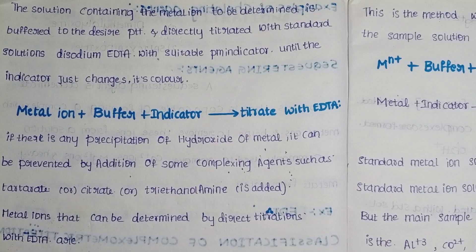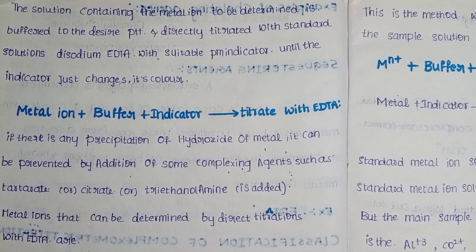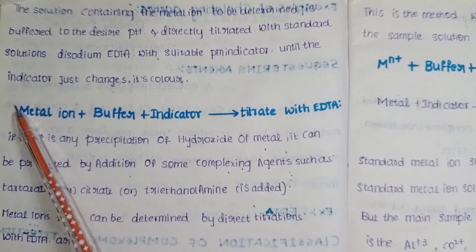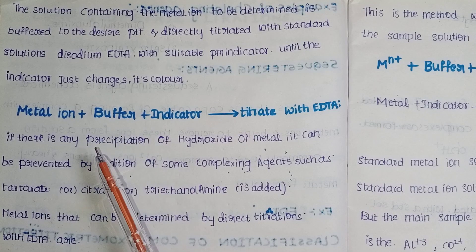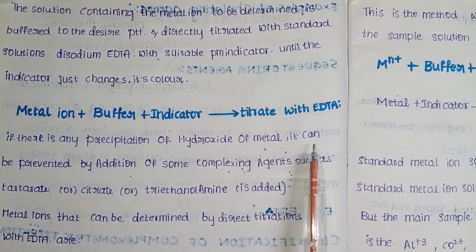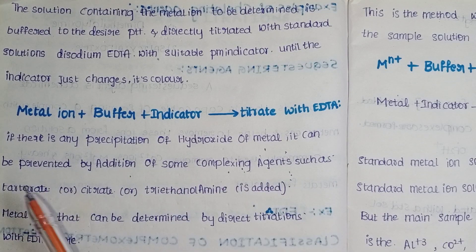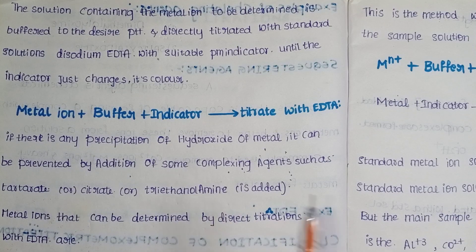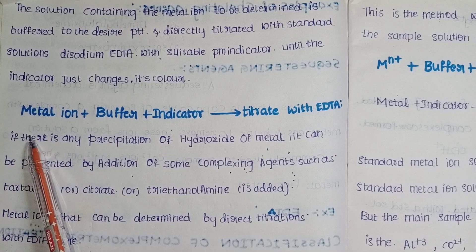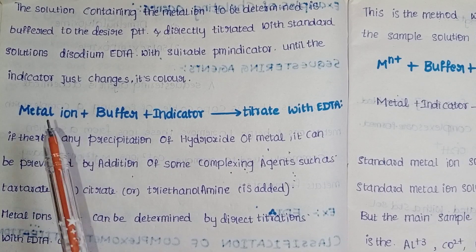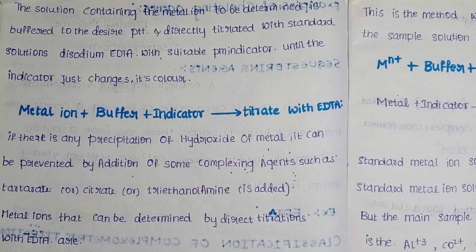Complexometric titrations detect metal ions such as calcium, magnesium, and zinc. One concern is precipitation of the hydroxide of the metal, which can be prevented by addition of some complexing agents such as tartrate, citrate, or triethanolamine.